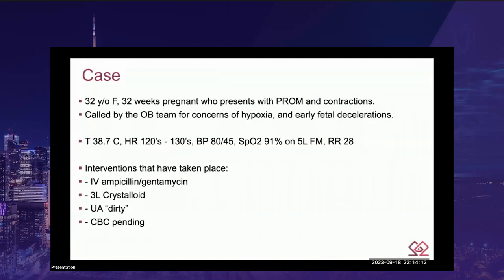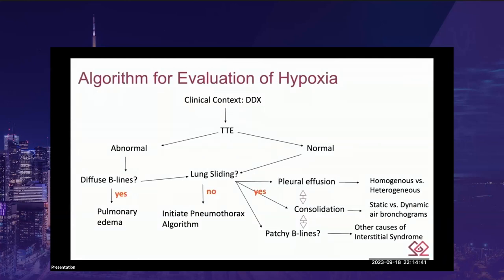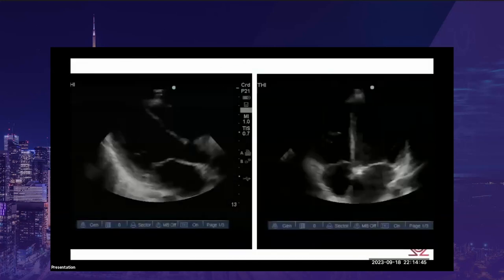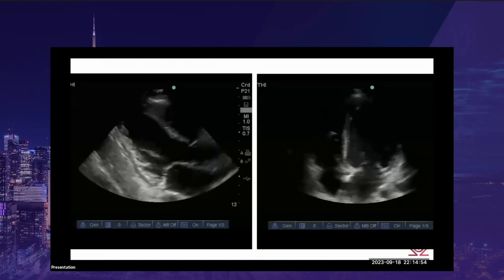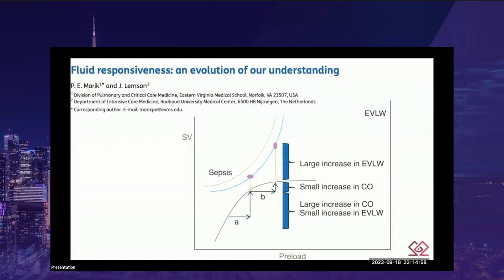Case 2: A 32-year-old woman at 32 weeks pregnant presented with premature rupture of membranes, contractions, and early fetal decelerations. She was hypoxic on five liters face mask, saturating 91%, hypotensive, tachycardic, and febrile. Antibiotics and fluids were started. Following the algorithm, first question was cardiac function. Echo showed severe biventricular cardiac dysfunction. In heart failure patients on the upper edge of the Frank-Starling curve, increasing preload does little to improve cardiac output.